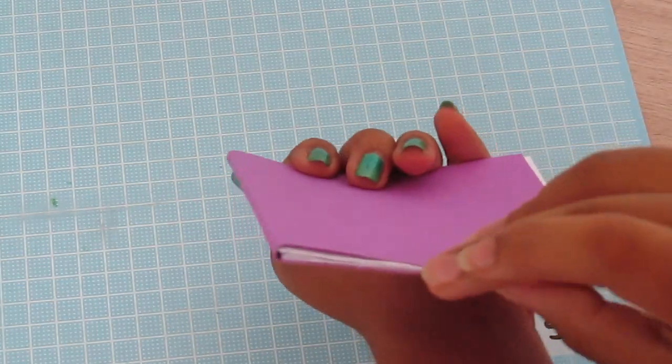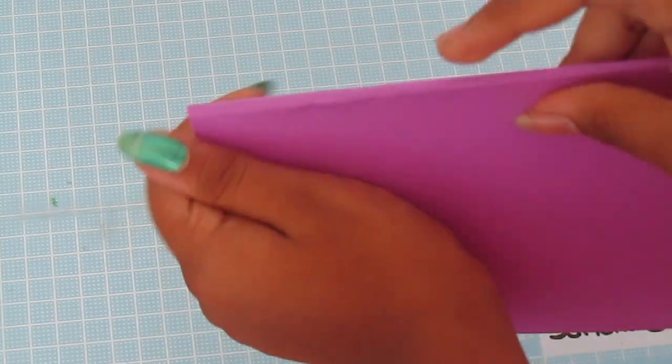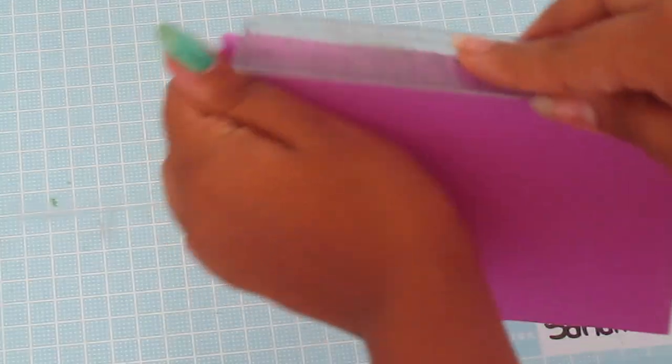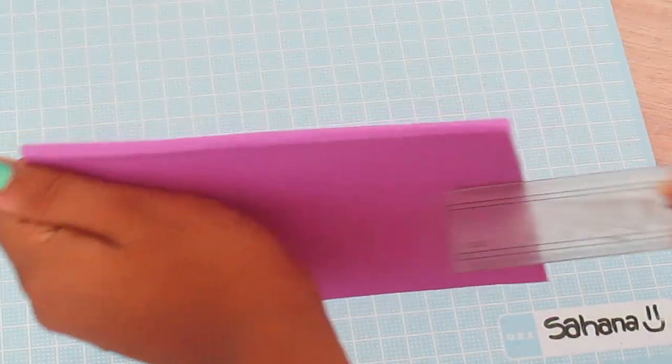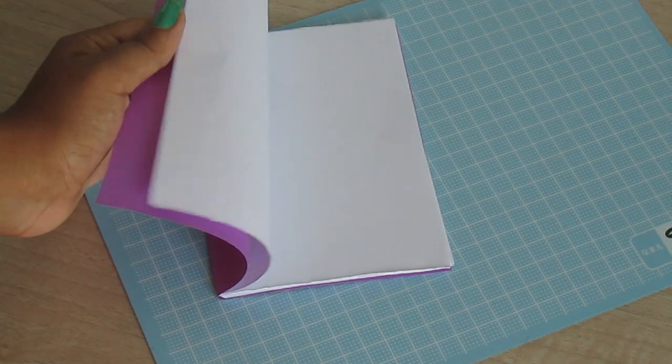You want to make sure it's nice and secure and has no scope for ever falling out. This is why I wouldn't recommend using glue stick because they're not strong enough and may not be very long-lasting for your book.